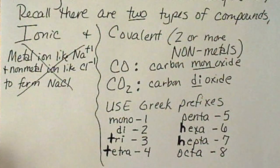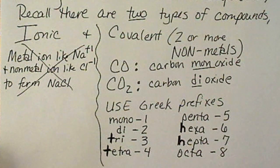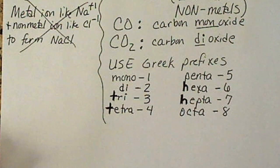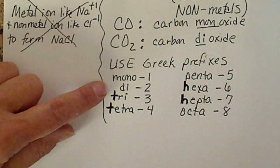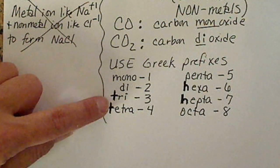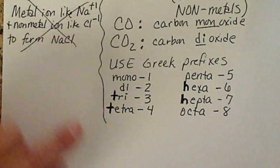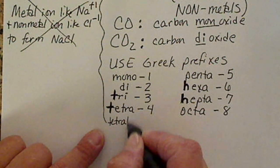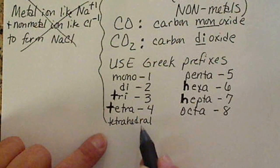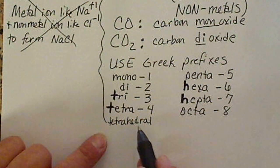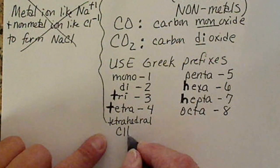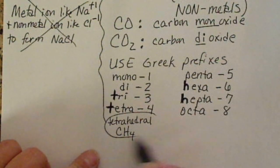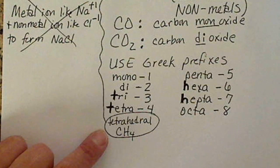In order to name covalent compounds, we need to know the Greek prefixes. So the first three we probably know: mono means one, di means two, tri is three, tetra is four. That Greek prefix also comes from the shape, the tetrahedral molecule has four atoms bonded to the central atom. So again, tetra means four.